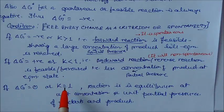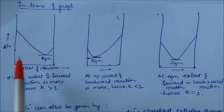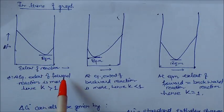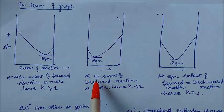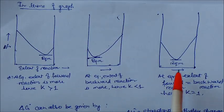The third condition: if delta G° equals zero, then K equals 1. Looking at the three graphs of delta G versus extent of reaction: when K is large, delta G° is negative and the forward reaction dominates at equilibrium; when K is less than 1, the backward reaction dominates; and when K equals 1, forward and backward extents are equal.